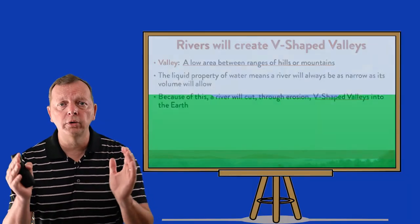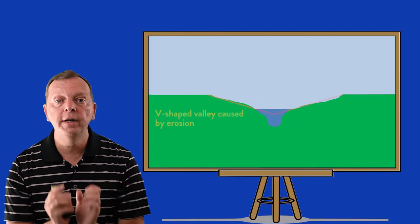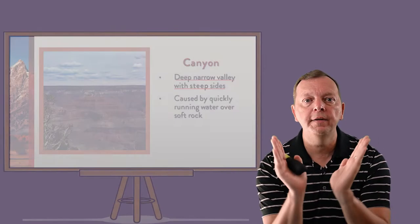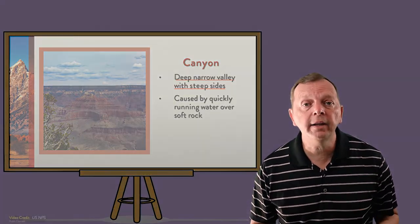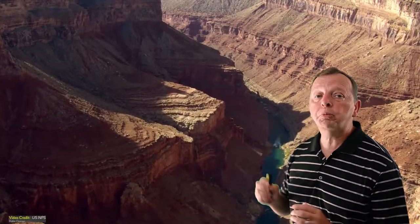Because gravity pulls water down to the lowest point, a river will always be as narrow as its volume will allow. This is why rivers create V-shaped valleys through erosion. But sometimes river currents moving quickly out of higher elevations, along with softer rock, will cut straight down instead, creating what is called a canyon. A canyon is a valley with steep rocky walls, and a narrow canyon might be called a gorge. The Grand Canyon is probably the best example, created by the Colorado River six million years ago in an area uplifted by tectonic activity.